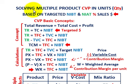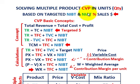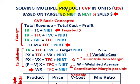What we're going to be going over here is solving for multiple product cost volume profit analysis in units or quantities. This is going to be based on targeted net income here before and after taxes as a percentage of sales dollars. We're going to be working with a percentage of sales dollars to determine the different quantities we need for these multiple products in order to derive some targeted net income before and after taxes.